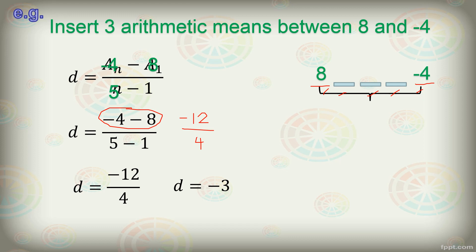This negative 3 will be our key to insert those three arithmetic means. We will add this to the first term, then continuously add to obtain the three arithmetic means. So 8 plus negative 3 is 5, then 5 plus negative 3 is 2, then 2 plus negative 3 is negative 1. That's how we find arithmetic means when asked to look for more than one.